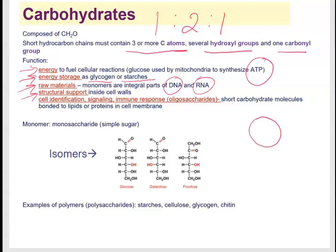Carbohydrates are also used for cell identification, signaling, and immune response. Each cell has a specific chain of sugar molecules that distinguishes it from others. In organ transplants, for example, the immune system recognizes different sugar chain patterns and may attack the transplanted organ, causing rejection. This is why close matches are needed and patients must take immunosuppressant medication. These sugar chains act as ID tags unique to every organism.